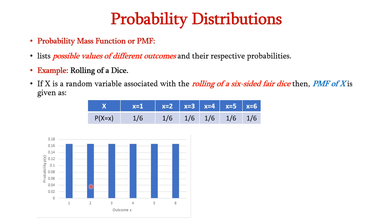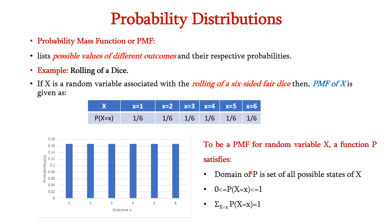Graphically it can be represented as a discrete plot. To be a PMF of random variable X, a function p must satisfy the following conditions: the domain of p is the set of all possible states of X; if we sum up all the probabilities, then the total will be 1; and the value of each probability will be between 0 and 1, since the maximum value is 1.